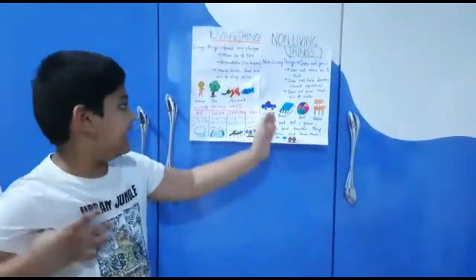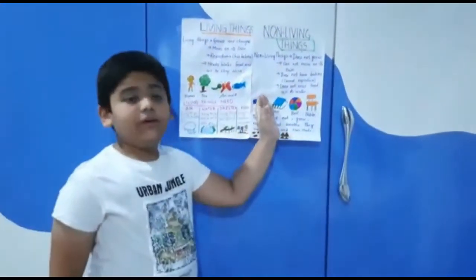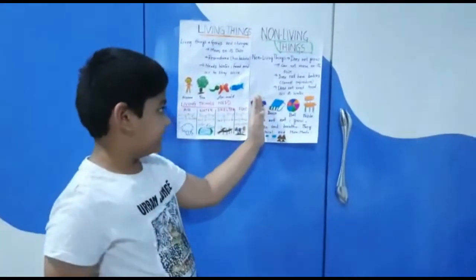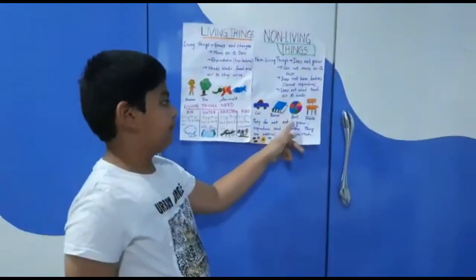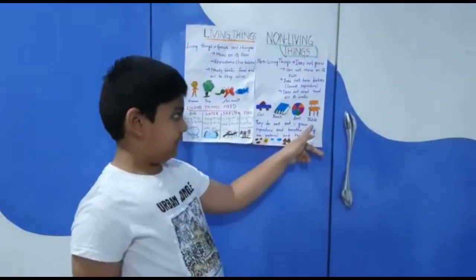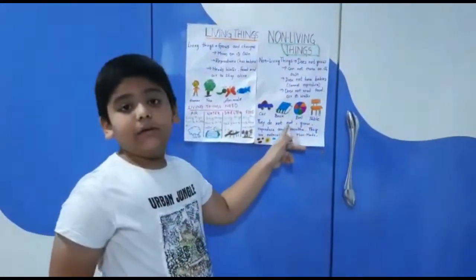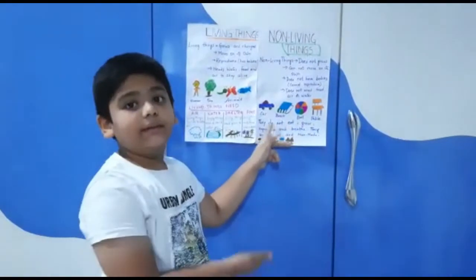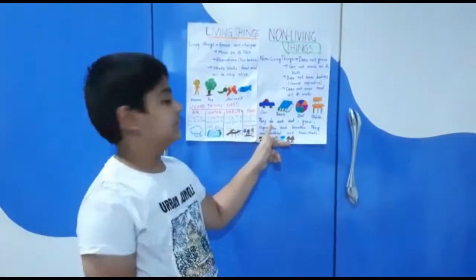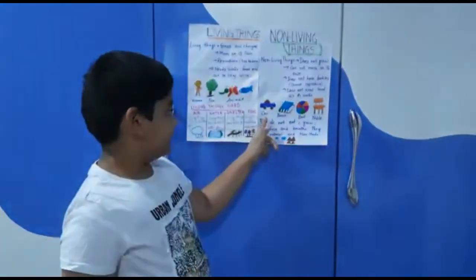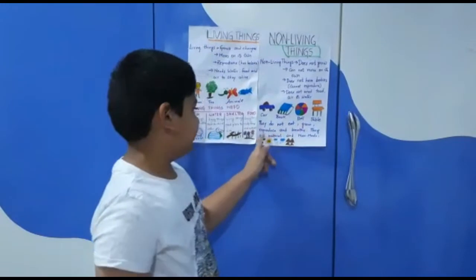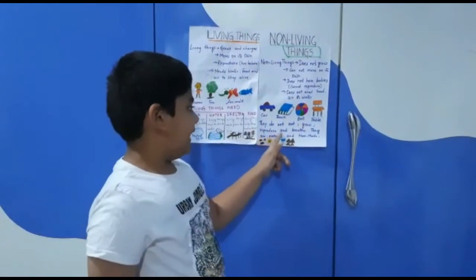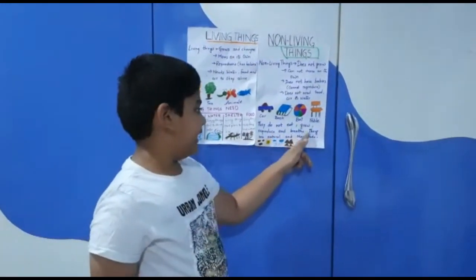These are the examples of non-living things: car, book, ball, table. There are more than this too. They do not eat, grow, reproduce, or breed.